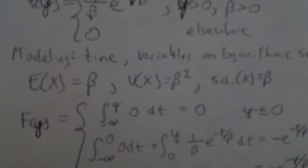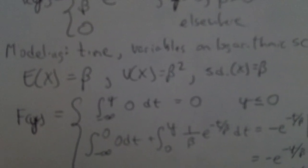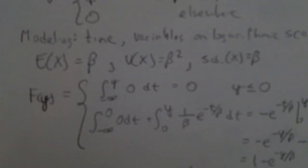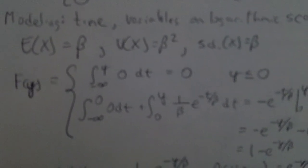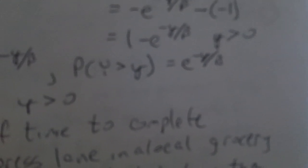Rather than integrating every time for probability calculations, the CDF for an exponential works out nicely. Going through the derivation, the CDF is 1 minus e^(-y/beta) for y greater than zero. For the probability that Y is greater than some value, you use e^(-y/beta) — that's just 1 minus the CDF. So those calculations are greatly simplified. There's no exponential distribution function on your calculator, but you don't need integration — you can just use the e^x function.